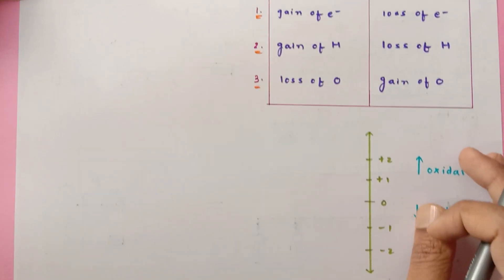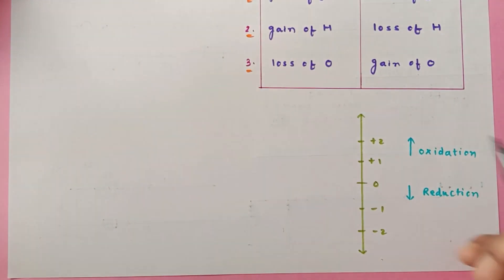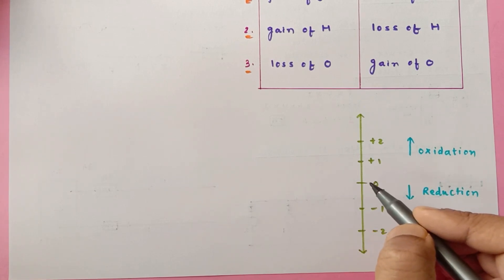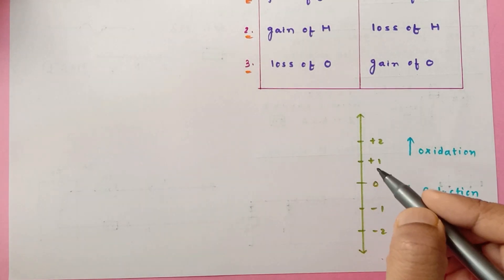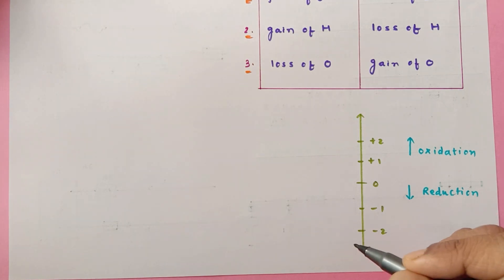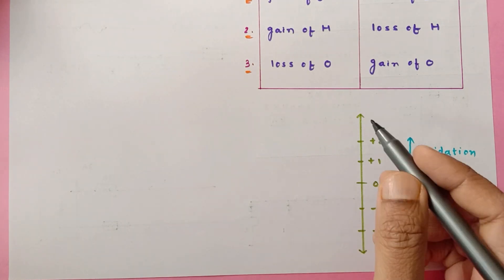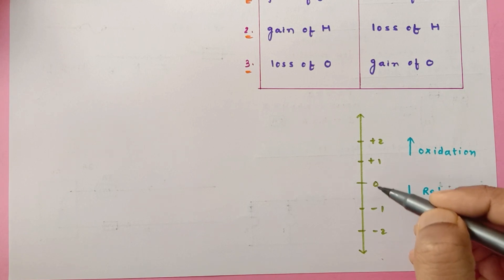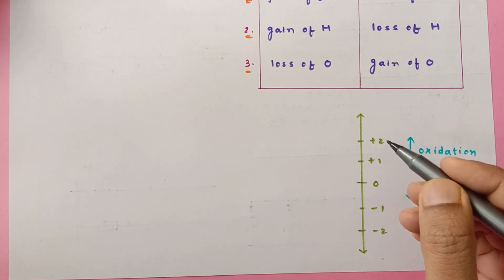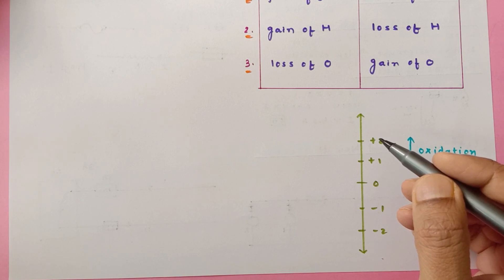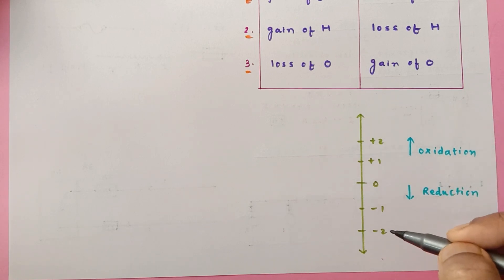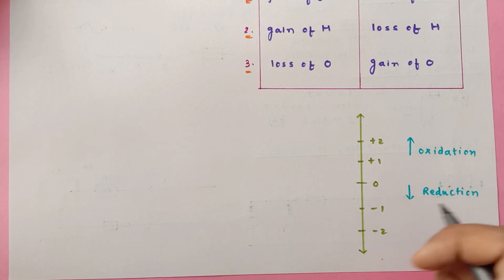This concept can be very well understood with the help of a number line. On the number line we have zero at the center, positive numbers at the top, and negative numbers at the bottom. So if you go up — whether from minus two to zero or from zero to two — it is oxidation. If you go down — from two to zero or from zero to minus two — the substance is said to be undergoing reduction.